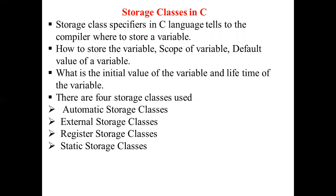The main function is called the storage class. The storage class specifier in C language tells the compiler where to store a variable, how to store the variable, the scope of the variable, the default value of the variable, what will be the initial value of the variable, and the lifetime of the variable.